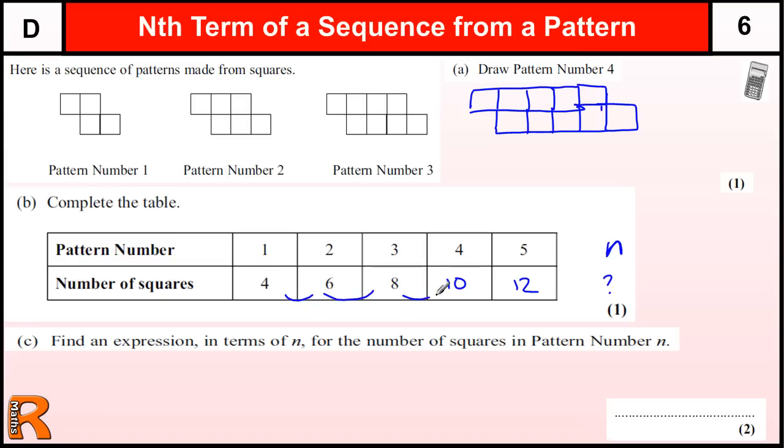Now, the key thing to do here is to look what it goes up by each time. It goes up by two each time. So if that goes up by two each time, that tells me this sequence is based on the two times table. So if I write down the two times table, that's 2n. So one times two, two times two, three times two, four times two, five times two. And then what have I got to do to that to get to this? Well, I've got to add on two.